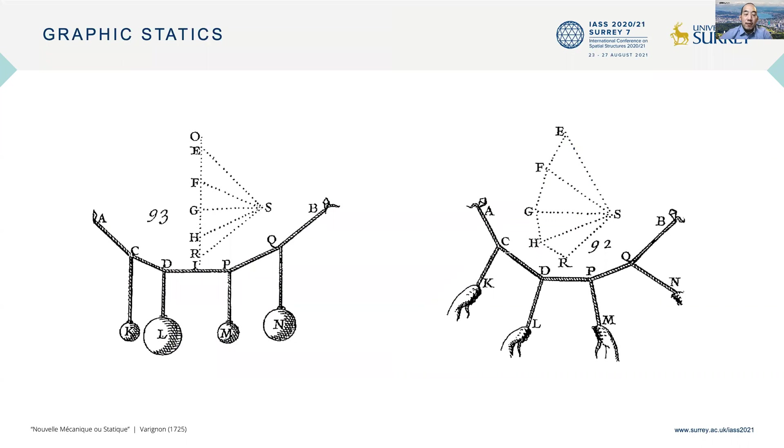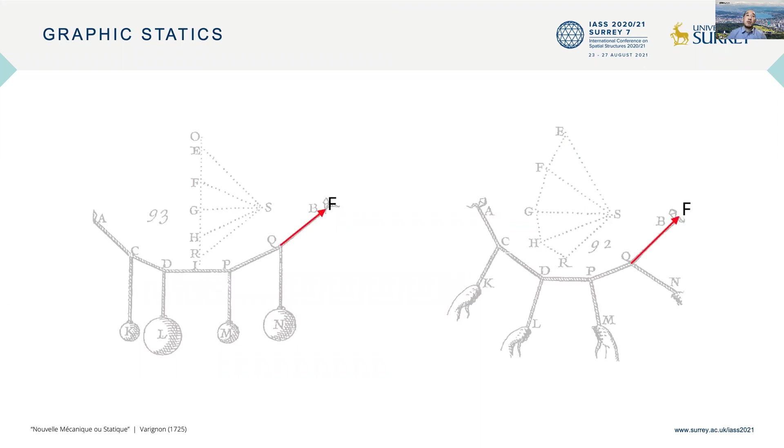Graphic Statics is a graphical method of designing and analyzing structures. There is a form diagram and a force diagram, one representing the form of the structure and the force diagram representing the force distribution. If you want to know the magnitude of force in a particular member of the structure, you simply measure the corresponding edge in the force diagram, and that is the magnitude of the force.